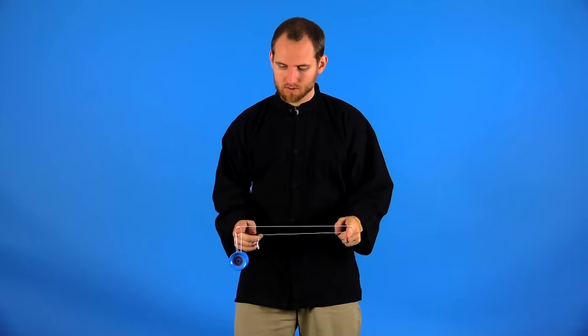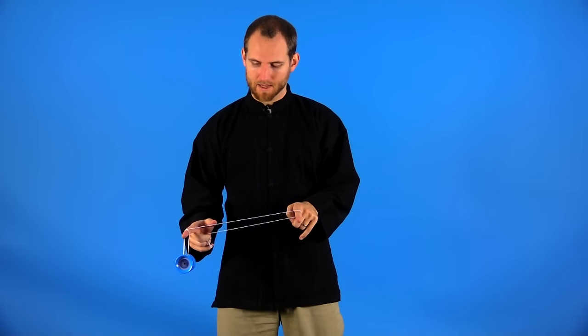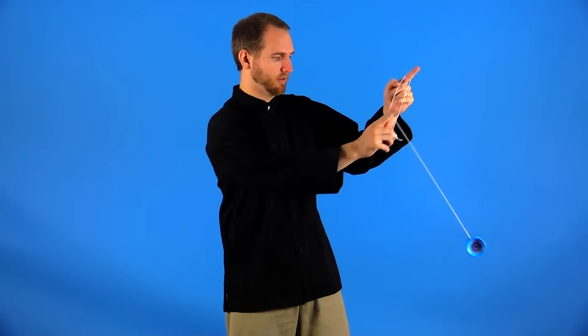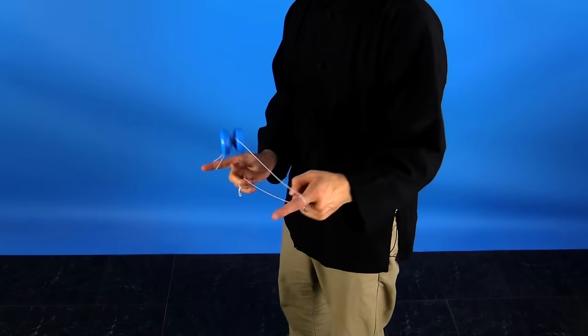So from the one and a half mount, what you're going to do is do a boomerang out to the side and pull it back and land it on this back string. The motion of this is a lot like a redirect, so you're going to want to check that video out.